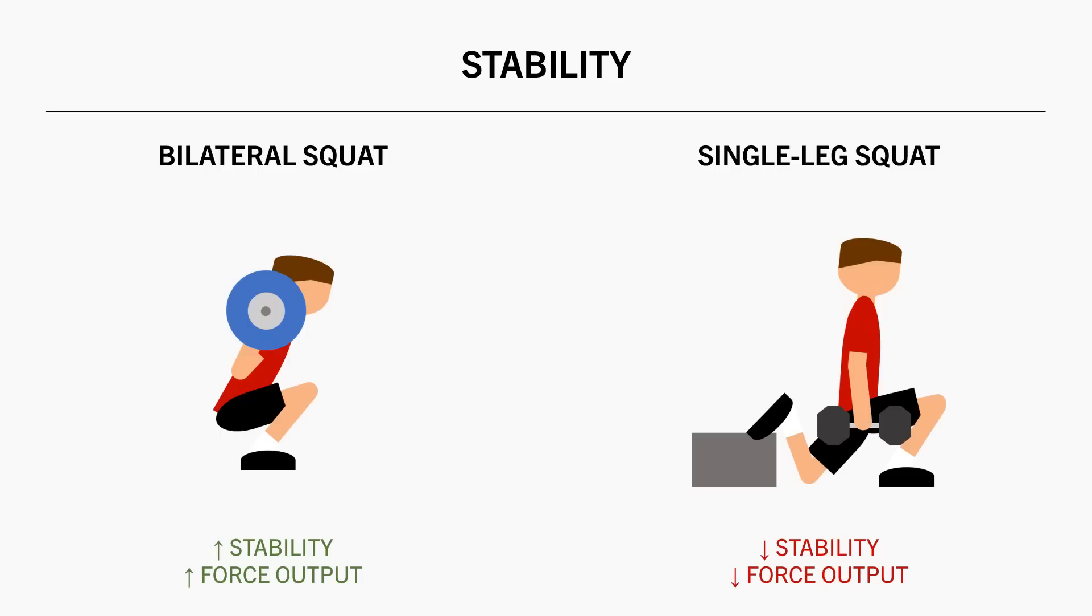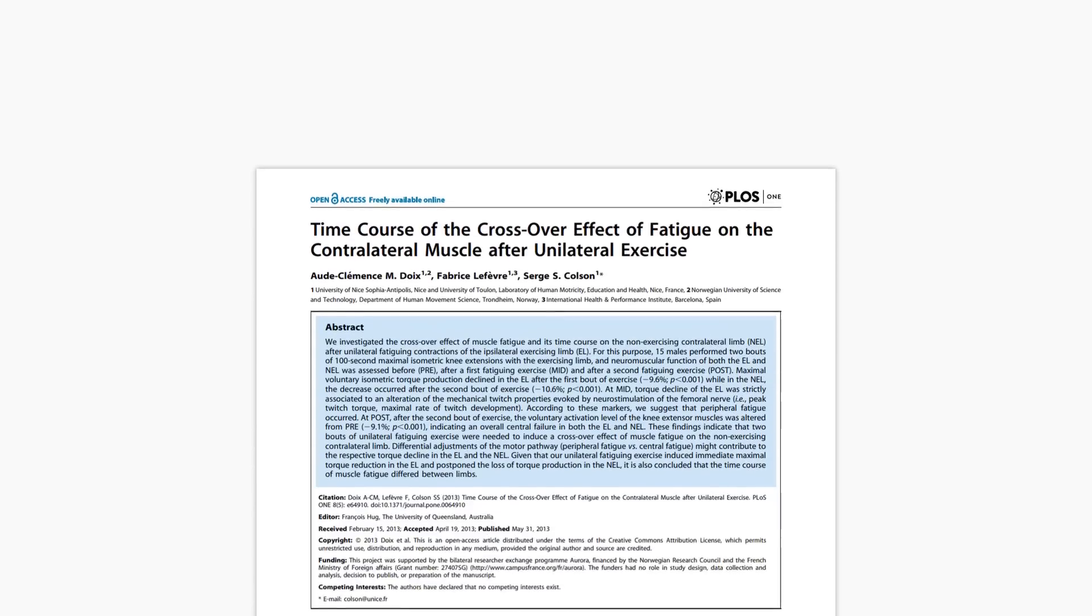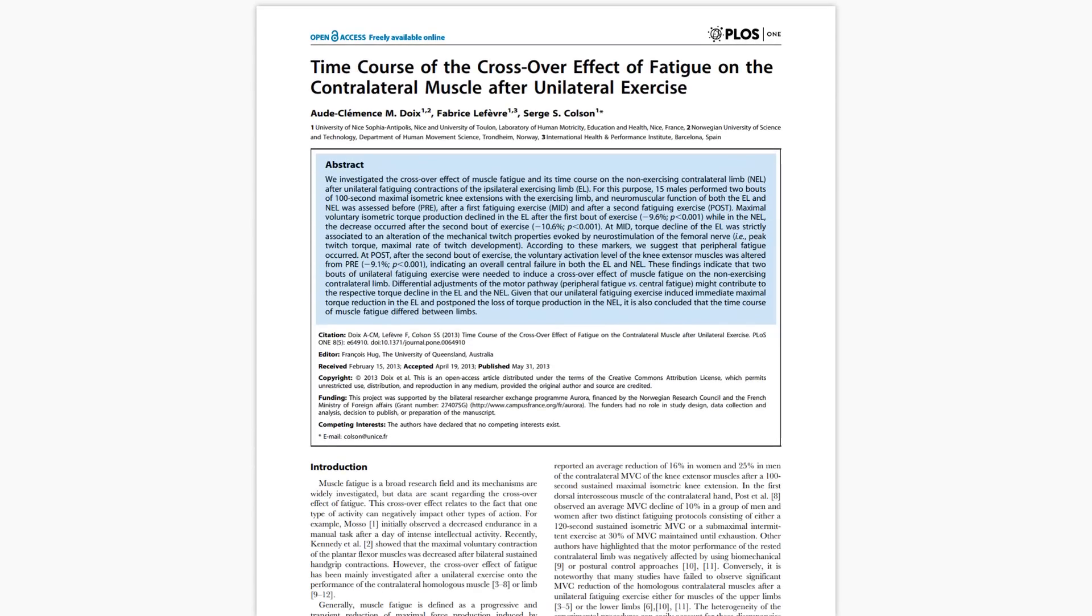The next potential issue with unilateral training is due to the effects of crossover fatigue. When we train one limb there seems to be a decrease in performance on the other limb too even though it wasn't trained.